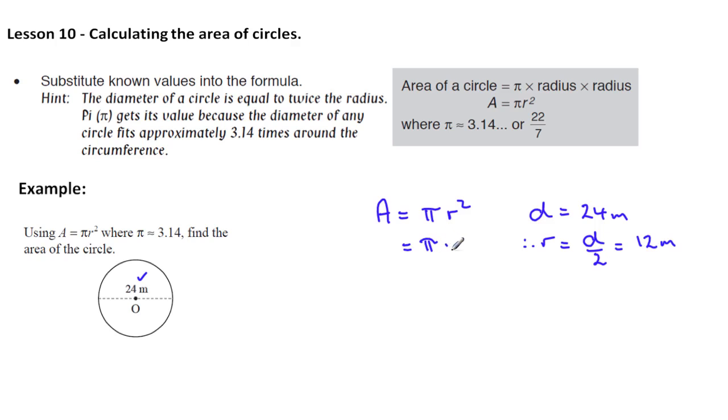Pi times our radius, 12 squared. Now in this case it's asking us for pi to be 3.14.